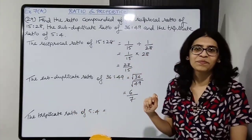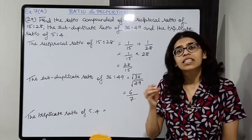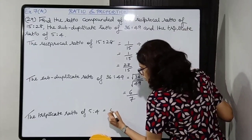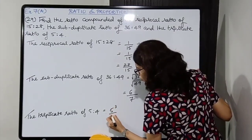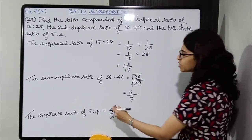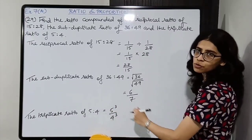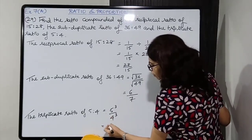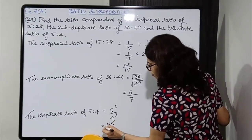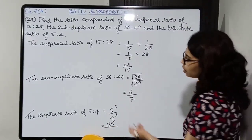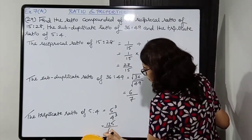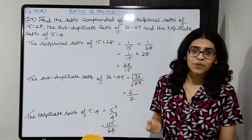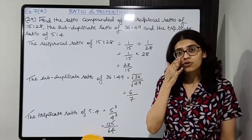The compounded ratio will be 28 upon 15 into 6 upon 7 into 125 upon 64. Let's see if anything cancels: 28 and 7 cancel to give 4; 4 and 64 cancel; 6 and 15... after cancellation we are left with 25 upon 8. So 25 is to 8 is the final answer.